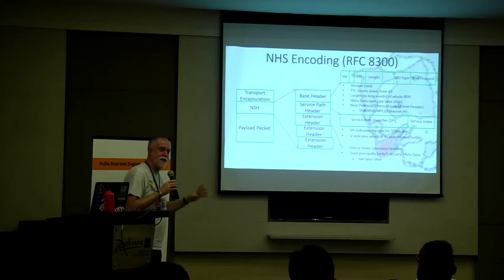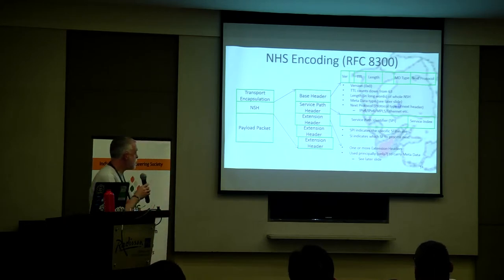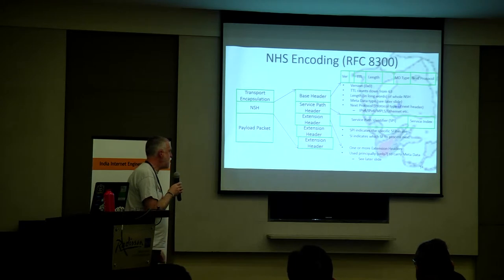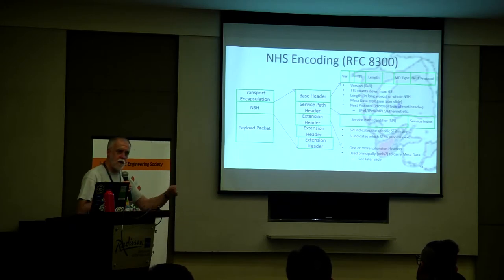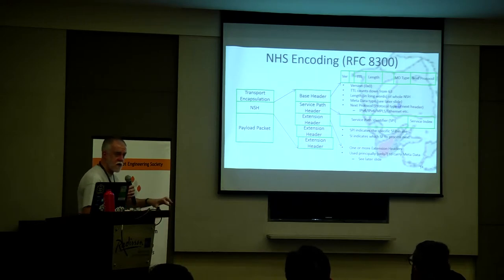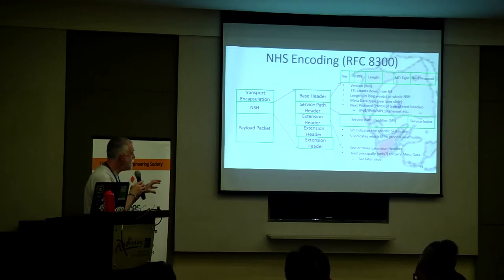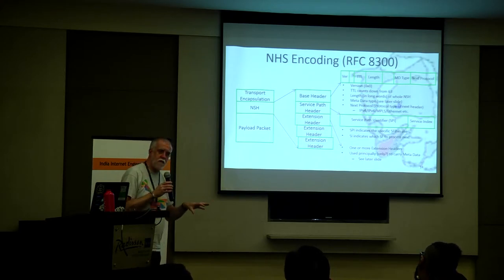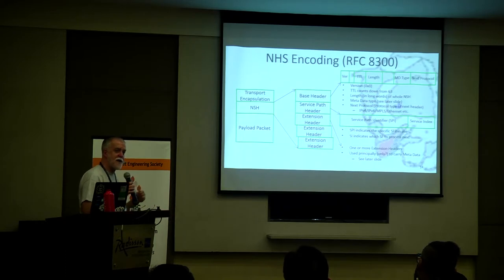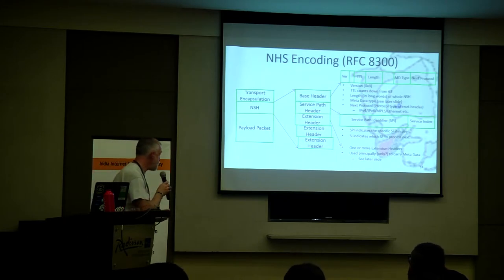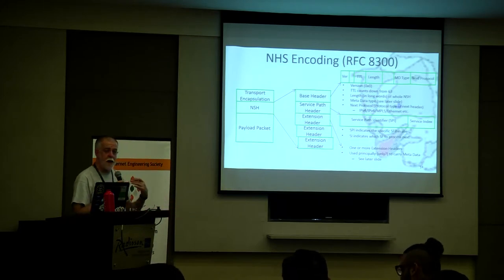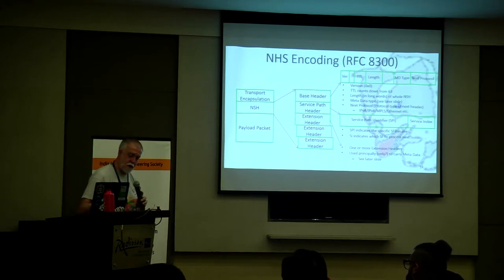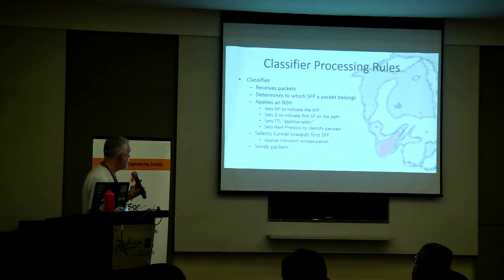The service path header is mandatory and has two fields: a Service Path Identifier (SPI) telling us which service path the packet is on, and a Service Index (SI) telling the SFF which is the next service function to process. Together they tell you exactly what to do next. The extension headers are intended to carry anything, and so far the only definition is for metadata.